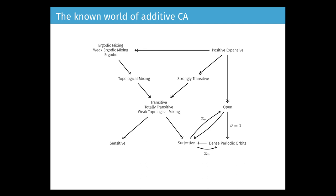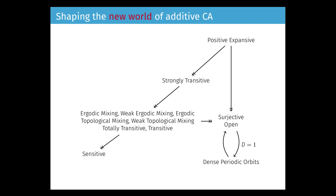What we proved in a former paper is that we can simplify further when considering finite abelian groups. In fact we have a very simple situation in which you see that there are only double arrows, with a specific situation concerning denseness of periodic orbits and surjectivity. This holds only in dimension one, and it is unknown if it holds for larger dimensions.